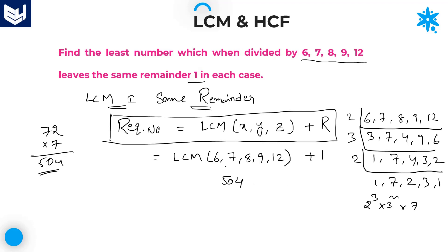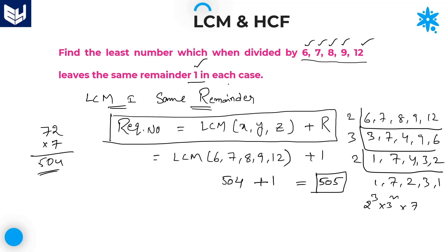So the required number is equal to LCM of 6, 7, 8, 9, 12 plus the remainder given in the problem, which is 1. That gives 504 plus 1 equals 505. Therefore, 505 is the least number which when divided by 6, 7, 8, 9, and 12 leaves the same remainder 1 in each case.